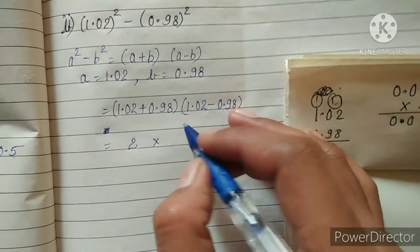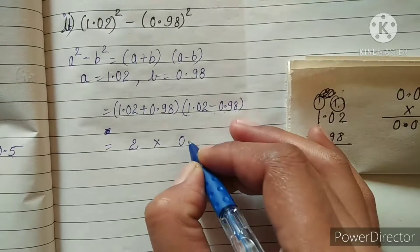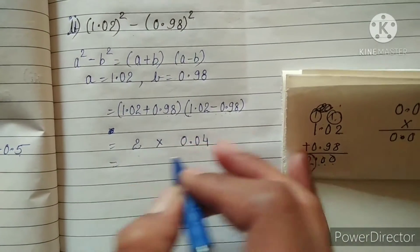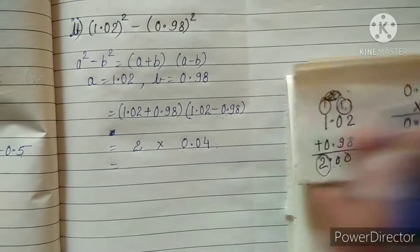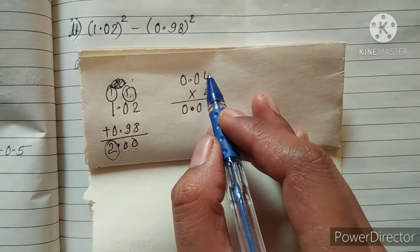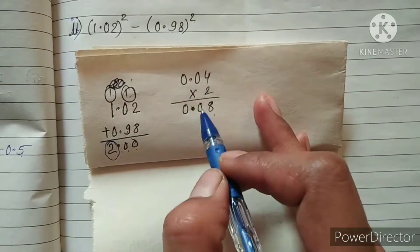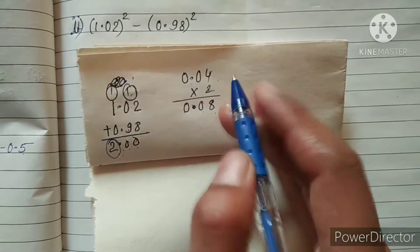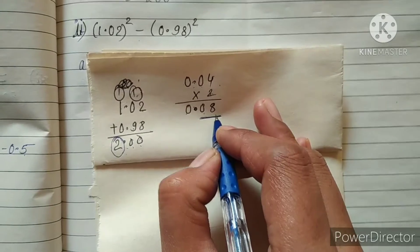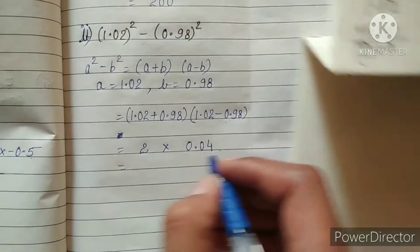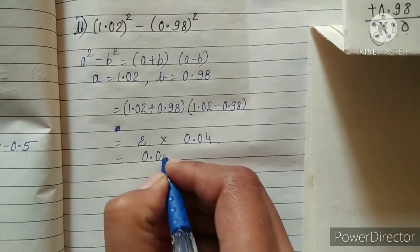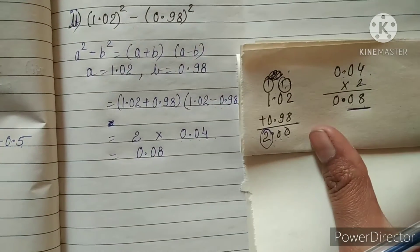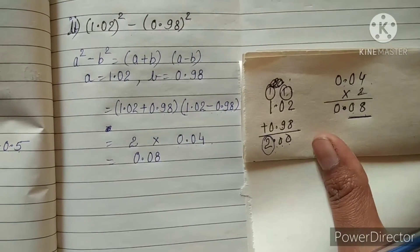The subtraction 1.02 minus 0.98 gives 0.04. Multiplying 2 by 0.04: 2 fours are 8, 2 zeros are 0, 2 zeros are 0. After the decimal we have 2 values, so the answer is 0.08. This is the solution of part 2 of question 7.